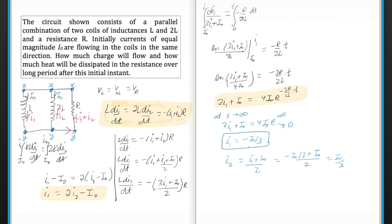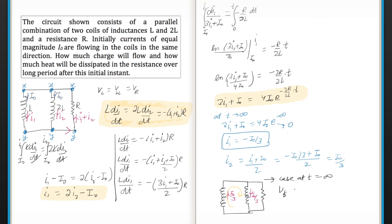So I2 is I₀/3 and I1 is −I₀/3. This means finally in the circuit at t → ∞, the current I1 is negative, meaning it flows in the opposite direction — I₀/3 in the reversed sense — and I2 is I₀/3 in the original direction. The net current through the resistor is zero. In the final state there is still some energy left in the inductors.